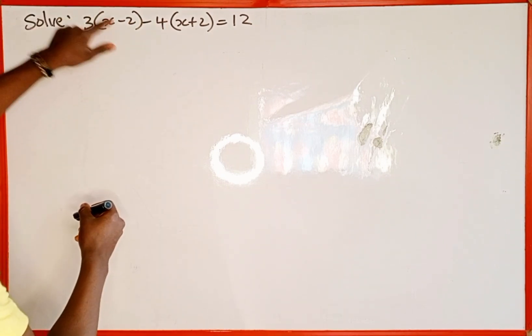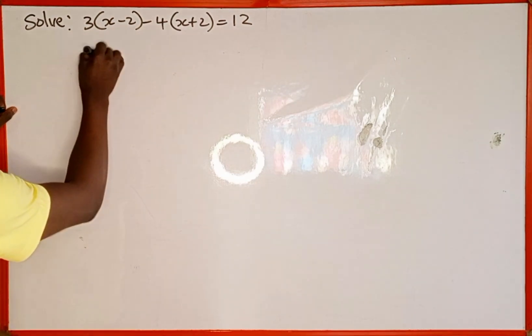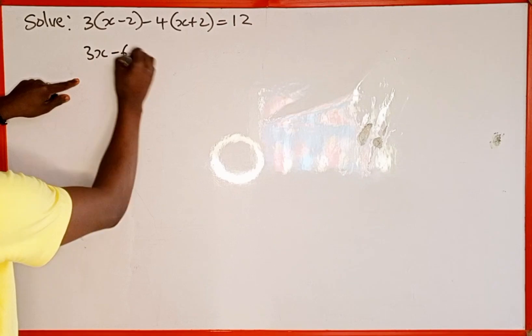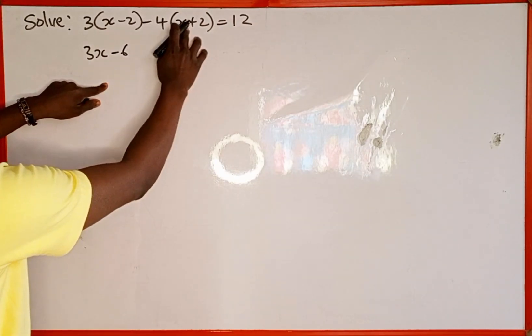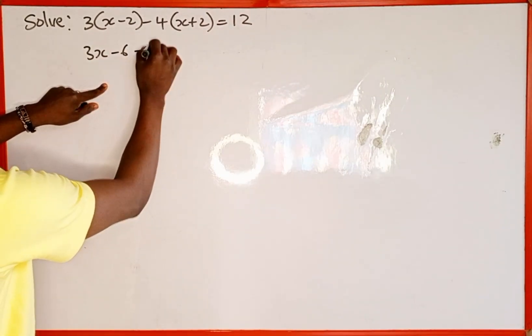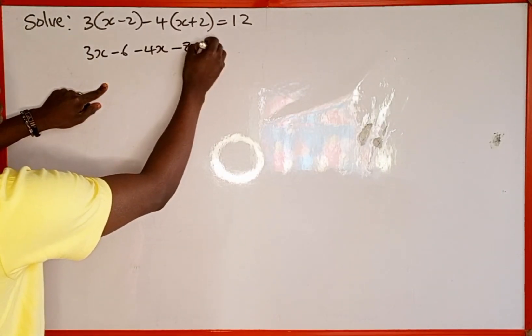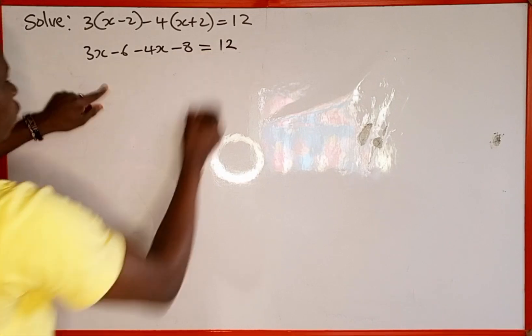So this is going to be 3 multiplied by x is going to give us 3x. Then 3 multiplied by negative 2 is going to give us negative 6. Then minus 4 multiplied by x is going to give us minus 4x. Then minus 4 multiplied by 2 is going to give us minus 8 which is going to be equal to 12.